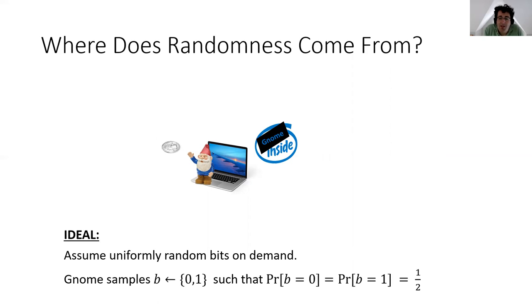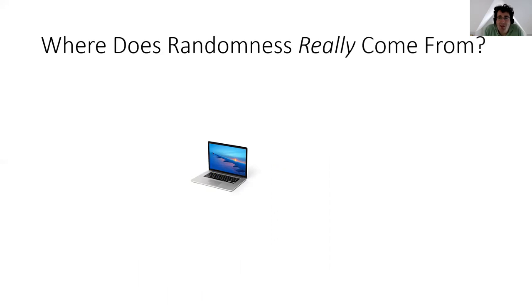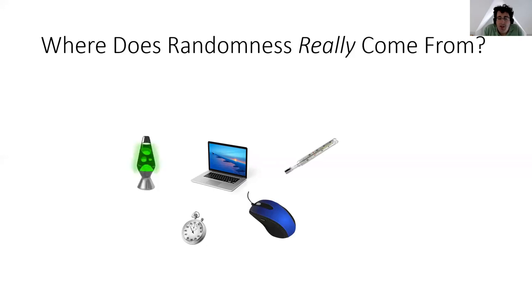So we can sample a bit zero or one with probability one-half. But when I talk to practitioners, they tell me that we don't actually have gnomes living inside computers. So where does randomness really come from? Well, the system measures various properties of the environment to derive random bits — for example, the timing of various system interrupts, which is a very popular source of entropy, or various mouse movements or other signals from I/O devices, or even the internal temperature. There's even a company whose shtick is to point video cameras at lava lamps and use the resulting images to get randomness.